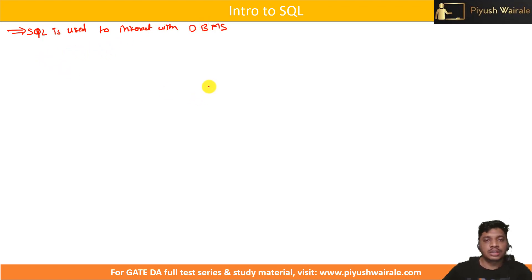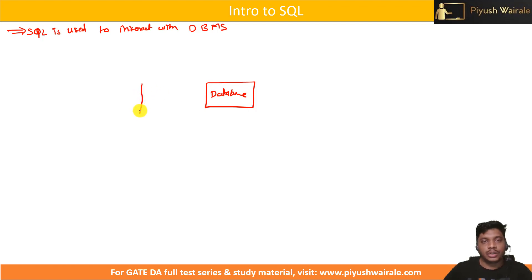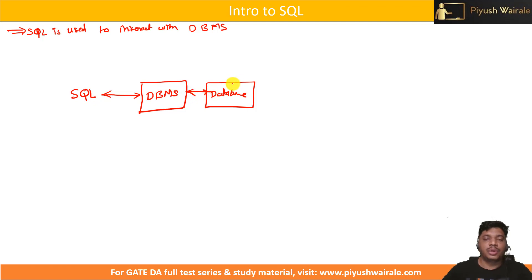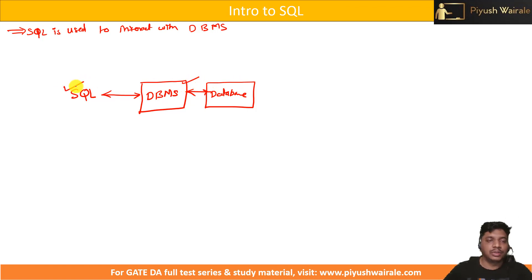How does SQL work? Suppose we have a database. In order to interact with this particular database, we use a Database Management System, that is DBMS. And in order to interact with this particular DBMS, we use SQL, that is Structured Query Language. So if you want to update any data, if you want to view any data, we use DBMS for that, and to interact with the database, we use SQL for that.